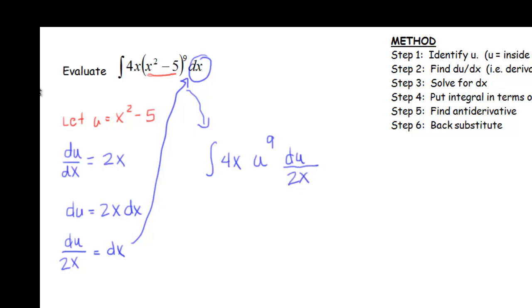Now we want all of our original variable to cancel. I can cancel this 2x with this 4x, and that leaves me a factor of 2. So my integral now looks like 2u⁹ du.